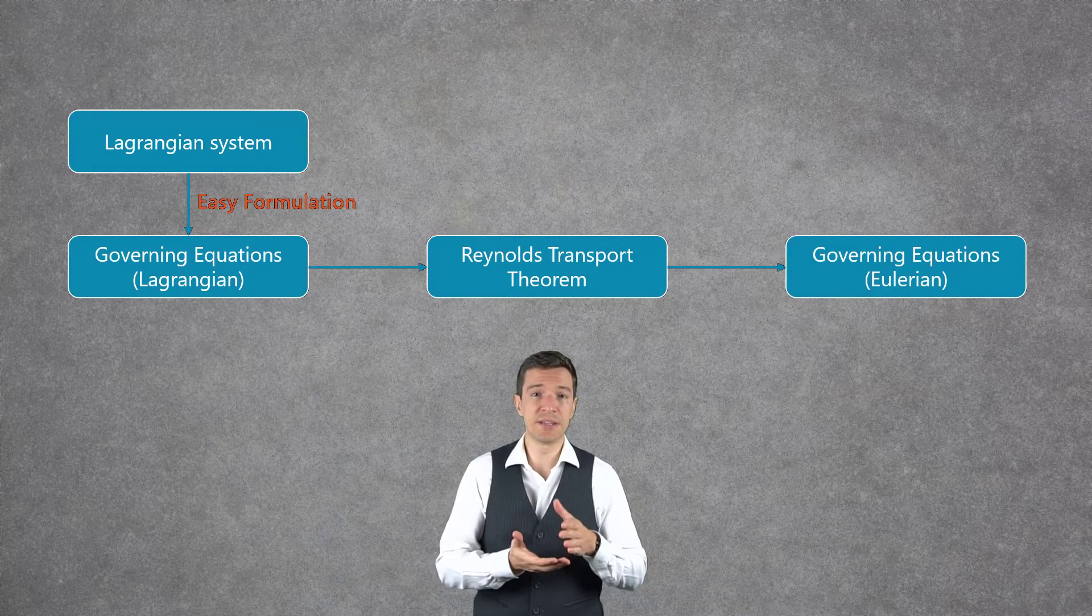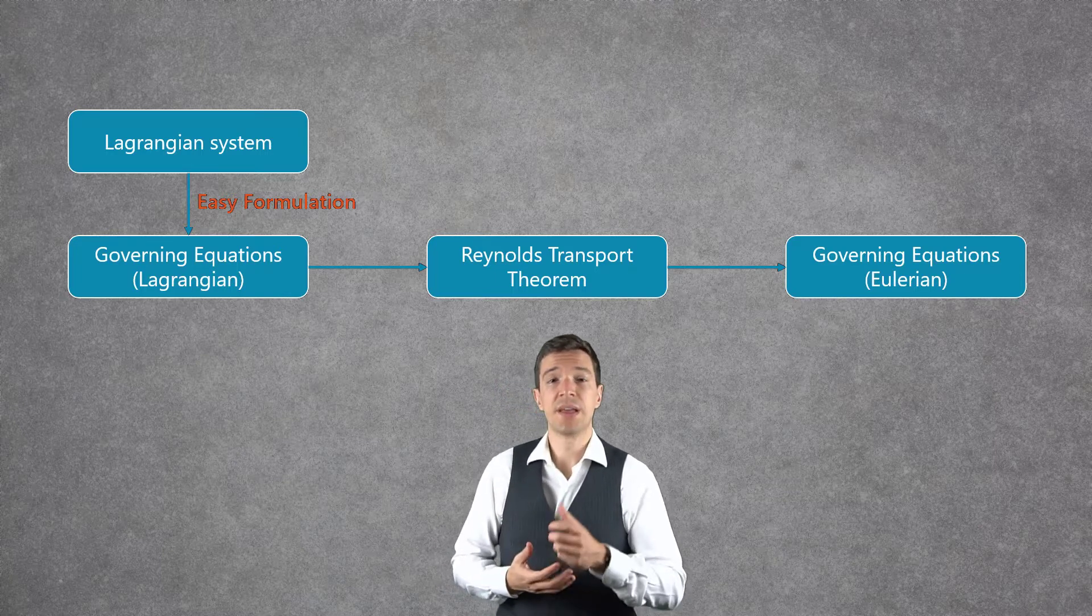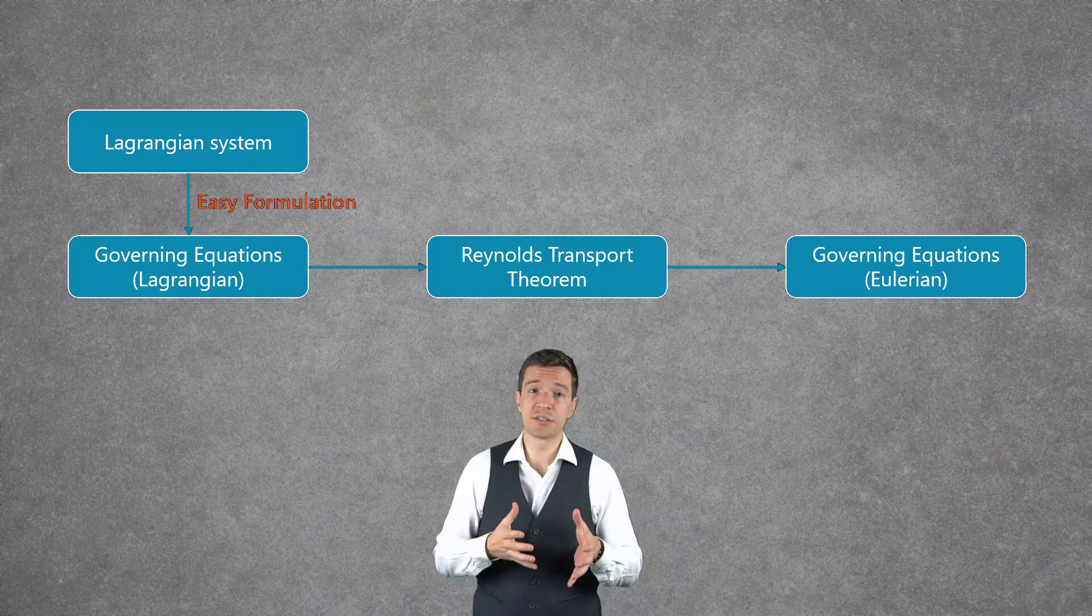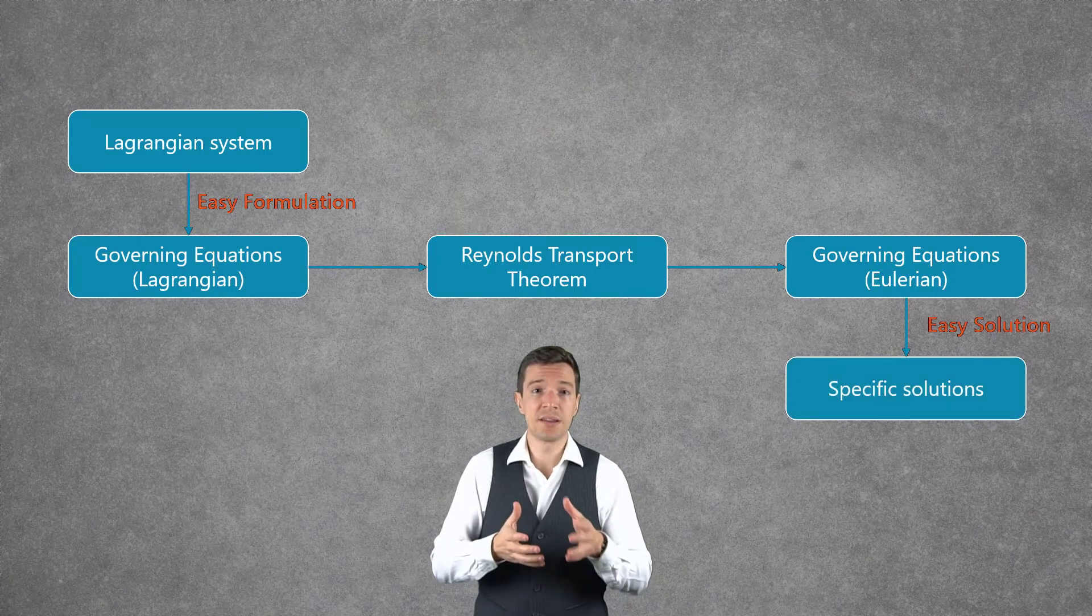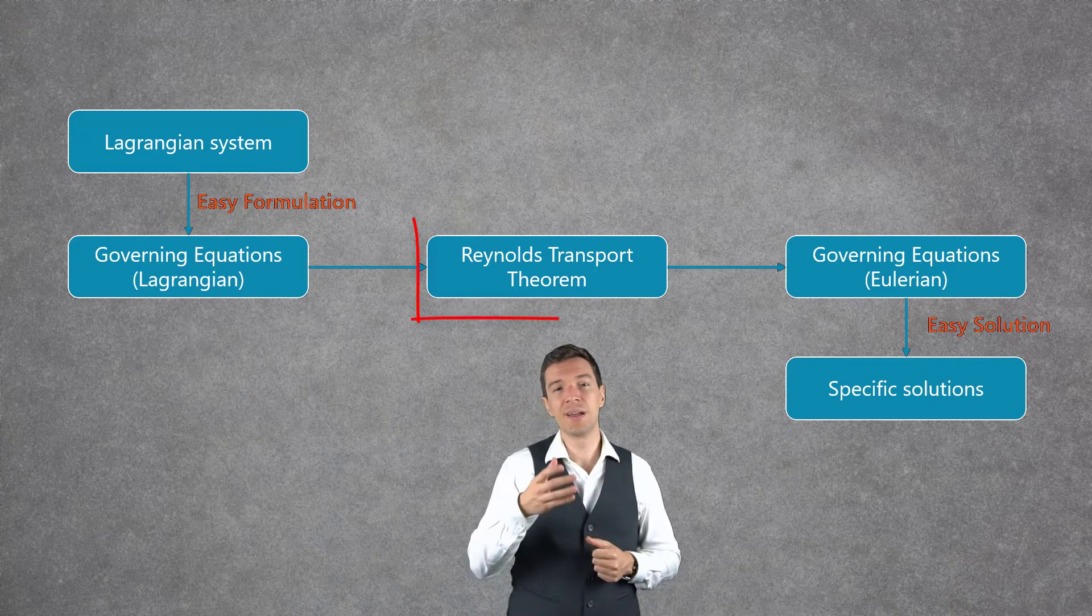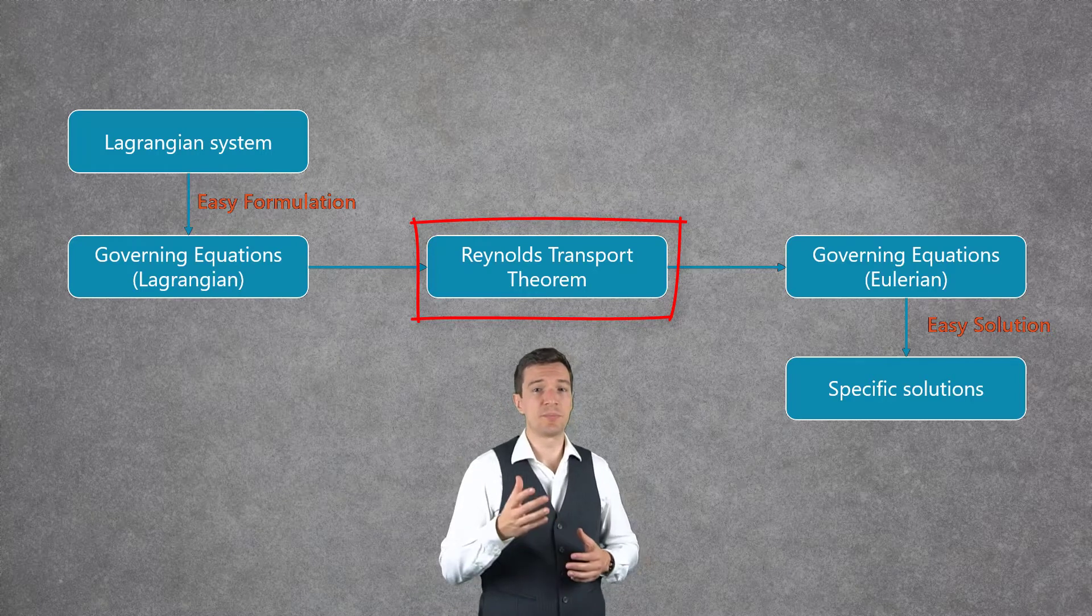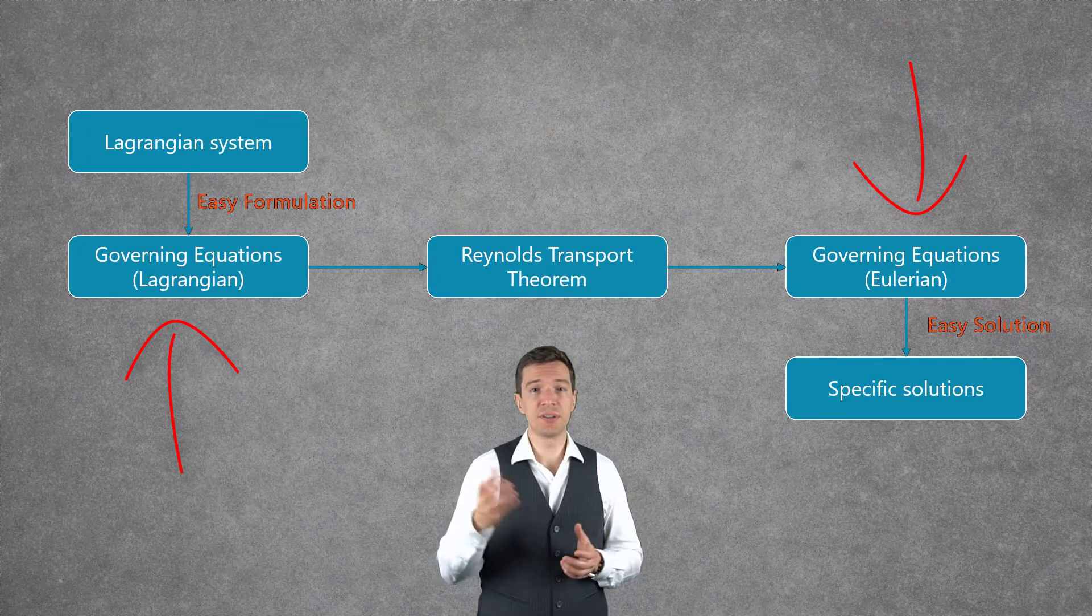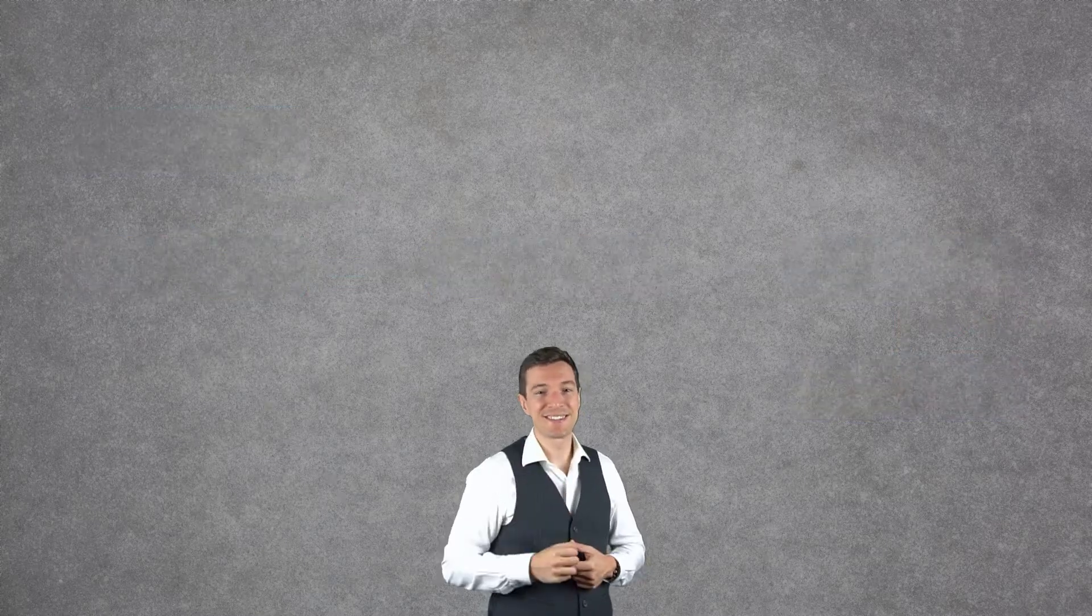Then we will move from the Lagrangian framework to the Eulerian framework in order to have equations that can be more easily handled and to obtain specific solutions. This is done using the Reynolds Transport Theorem that provides a bridge between these two frameworks. So let's get started!